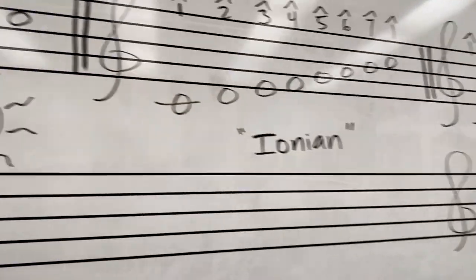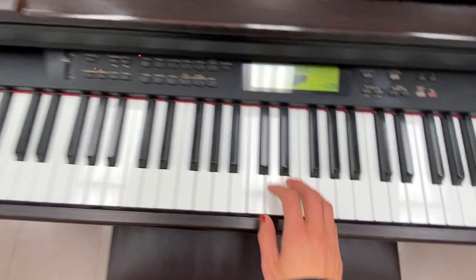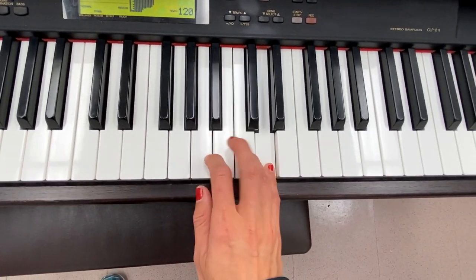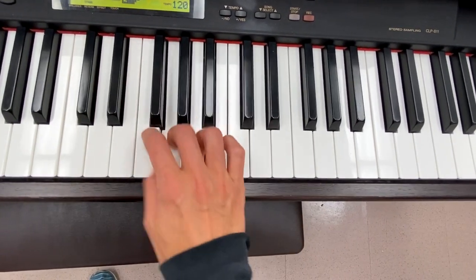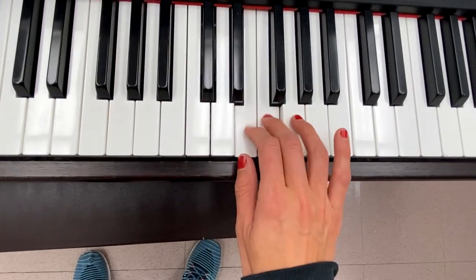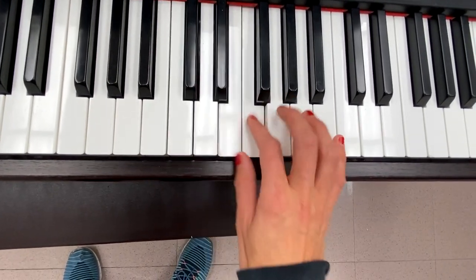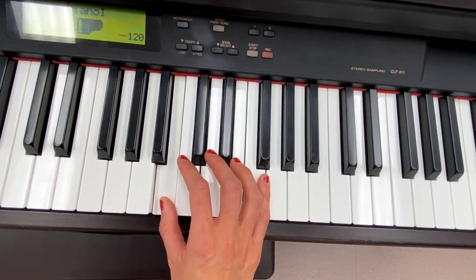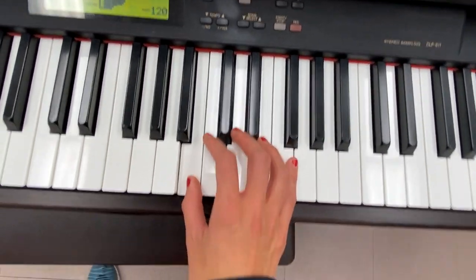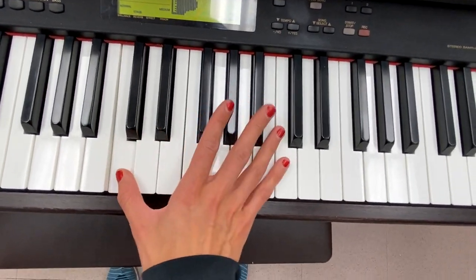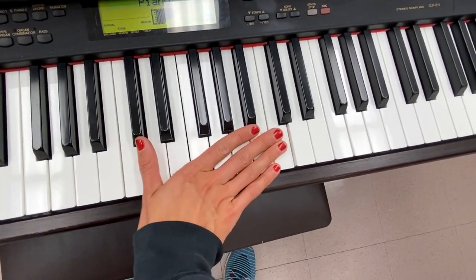Another thing about the modes is you want to learn them by improvising in them. Most people learn the modes by looking at all the white key scales — Ionian, Dorian, Phrygian, Lydian, Aeolian, Locrian. But that's not really the most intuitive way, because you don't really think about which notes are altered. When you stick to one scale and alter the notes within that scale, you start to see how the modes affect each scale.